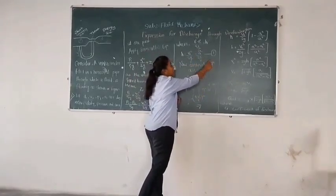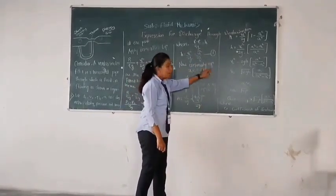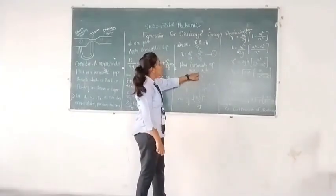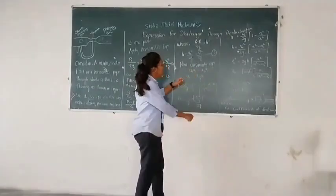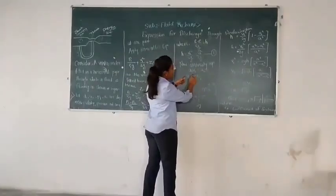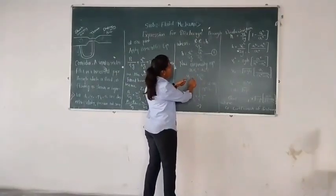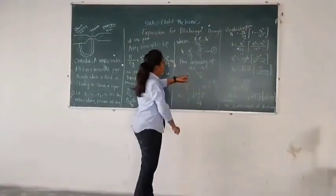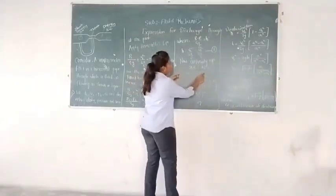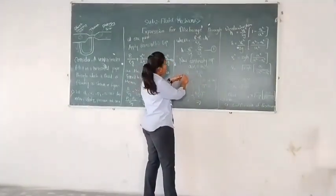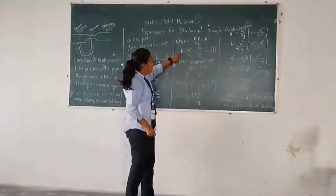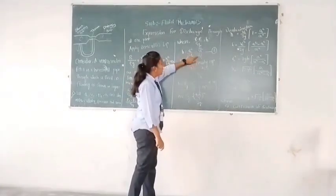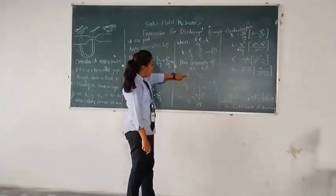Now applying the continuity equation, the continuity equation becomes A1·V1 = A2·V2. By rearranging the terms it becomes V1 = A2·V2/A1. We got the V1 value. Now we put the V1 value in our equation 1. So H = V2²/2g - V1²/2g. We put here our V1 value.